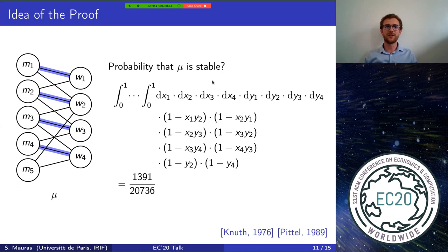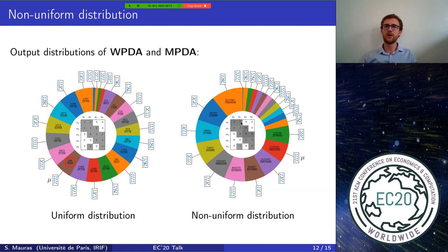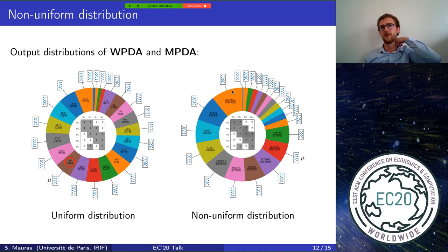Now let's discuss extending our result to non-uniform distributions. Recall the model: a bipartite graph where agents order neighbors uniformly at random — represented by a matrix of ones and zeros indicating edges. We generalize to a weighted bipartite graph where edge weights represent popularities. Larger weights mean two persons are more likely to prefer each other. We discovered this distribution through numerical experiments, starting from the uniform case.